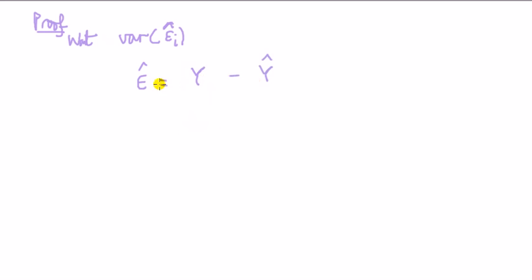So by definition of residuals, it's observed values - so here's a vector of observed values minus a vector of fitted values y hat. But from the model, y hat is the same as X times beta hat.